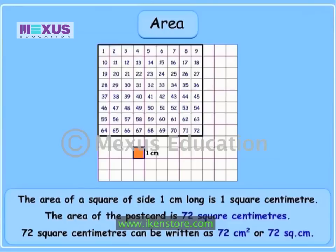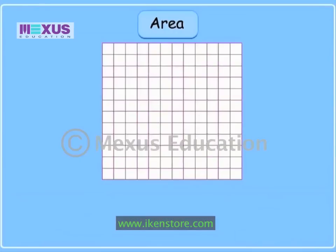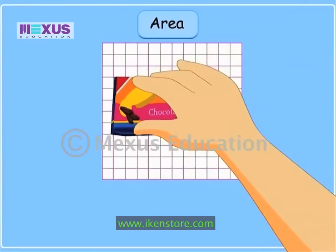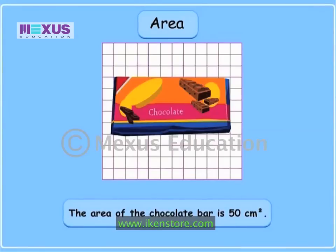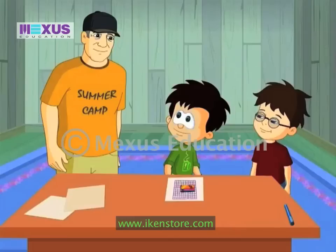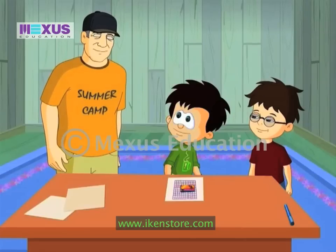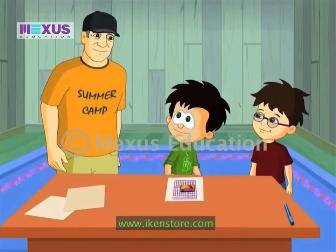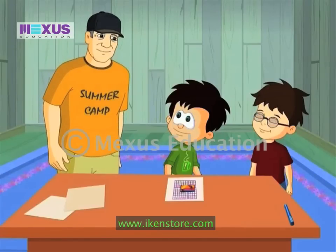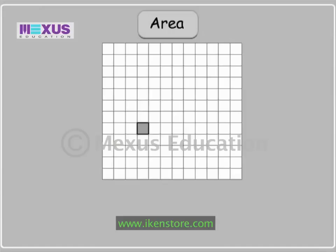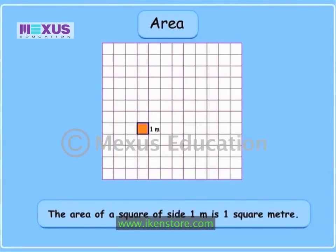We can also write square centimeters in short as centimeter square or cm². So if I place this chocolate bar on the grid and it covered fifty squares, the area of this chocolate bar will be fifty square centimeters. Can we do this with centimeters only? What about other units? Of course, you can measure area using other standard units. If I had to measure the area of something bigger, like the floor of this cabin, I would draw a grid which has squares each of side one meter long. The area of a square of side one meter is one square meter.